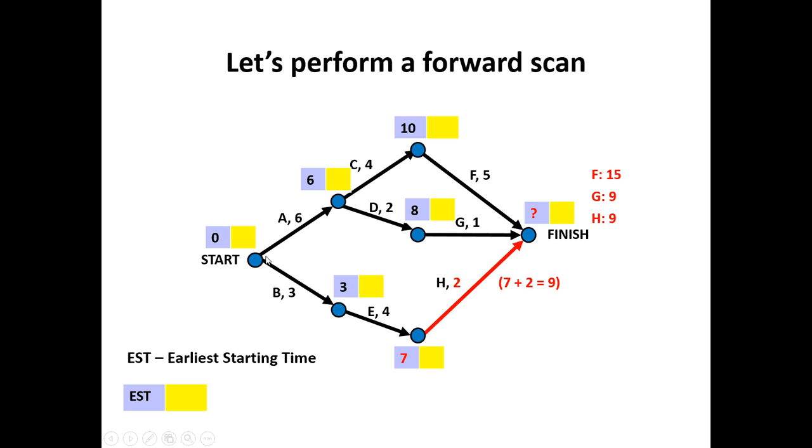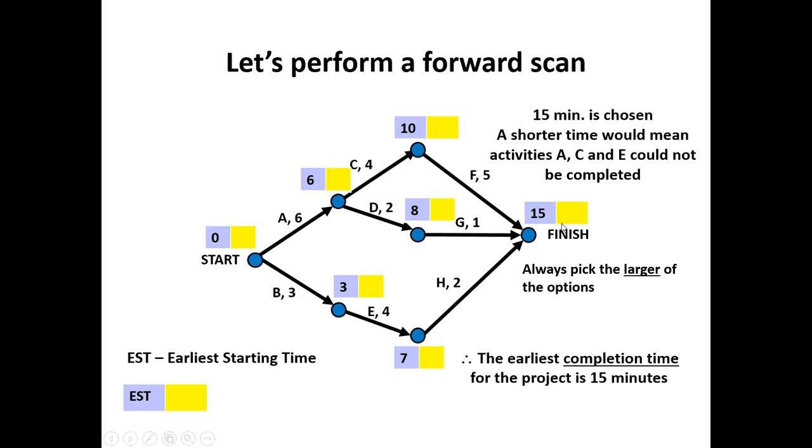Now if I want to enter in nine, that means there's no way I can actually complete activity A, C, and F following this particular sequence. Because the six, four, and the five gives me fifteen minutes. When I have competing activities, I have to take the larger of the numbers. So fifteen minutes is chosen. A shorter time would not allow A, C, and F to be completed.